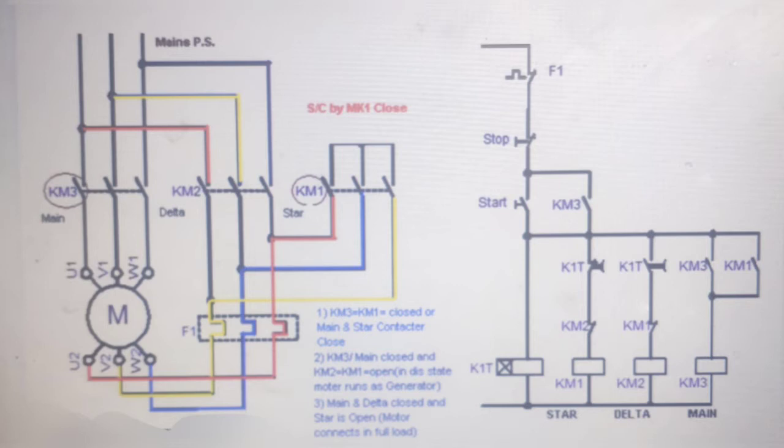Components used for star delta starters are conductors, timer, and thermal overload relay.